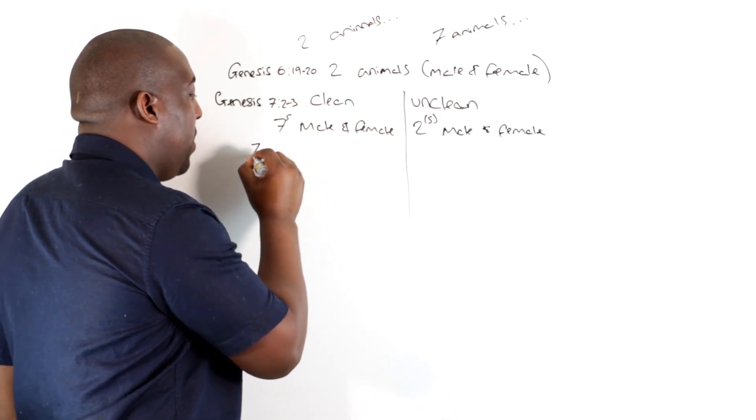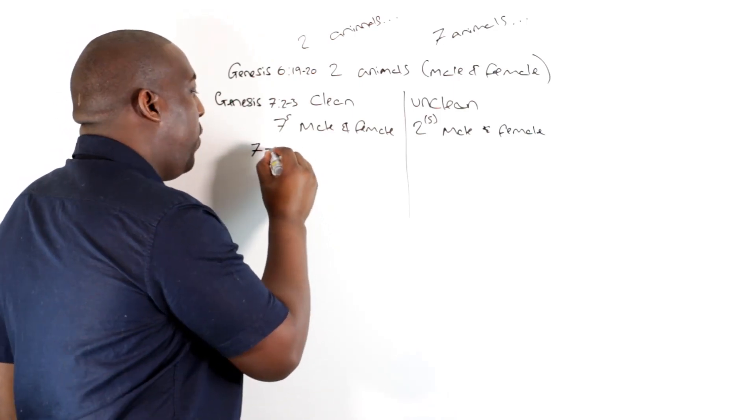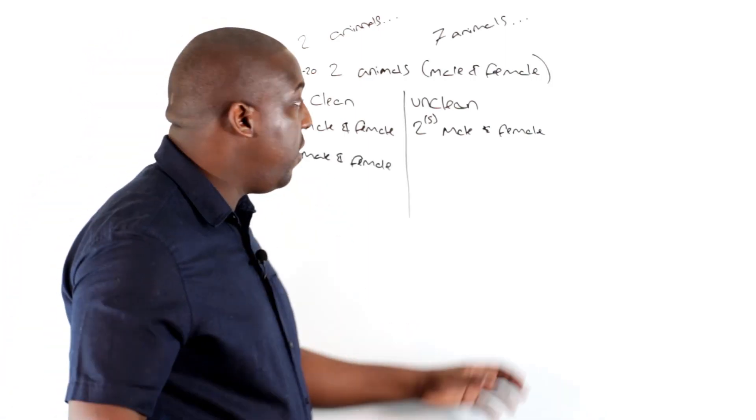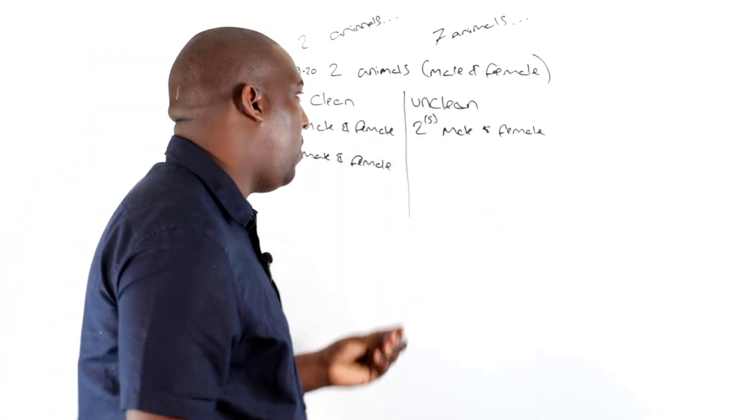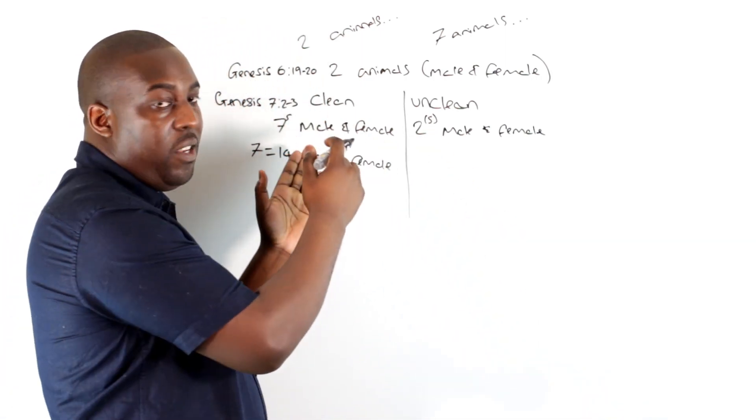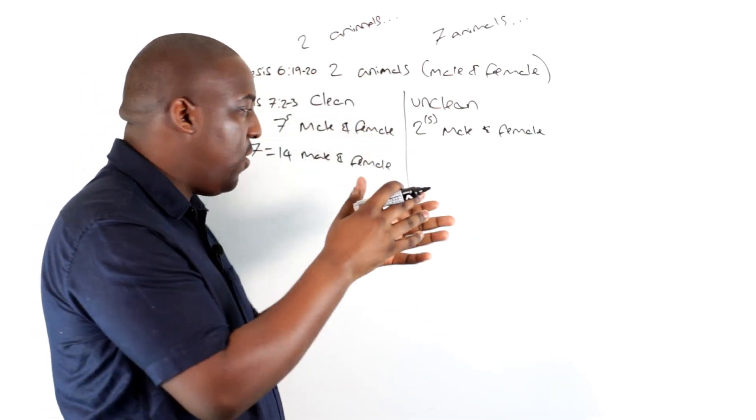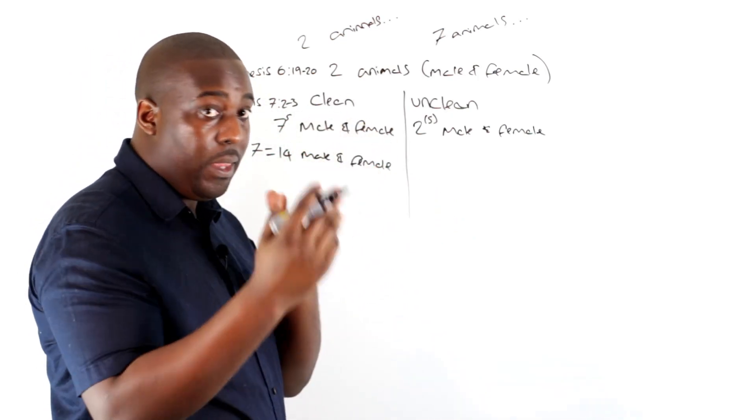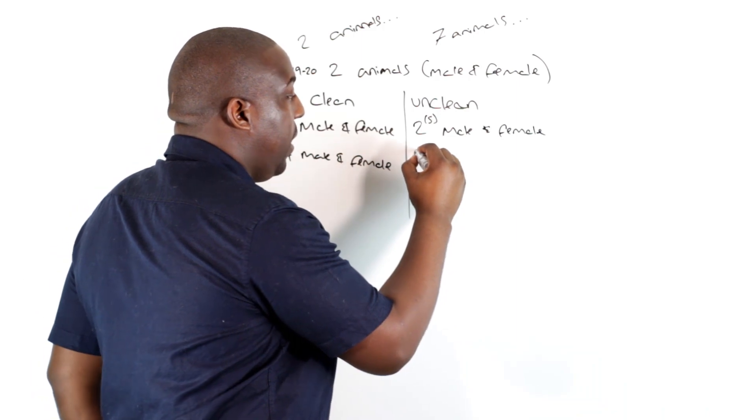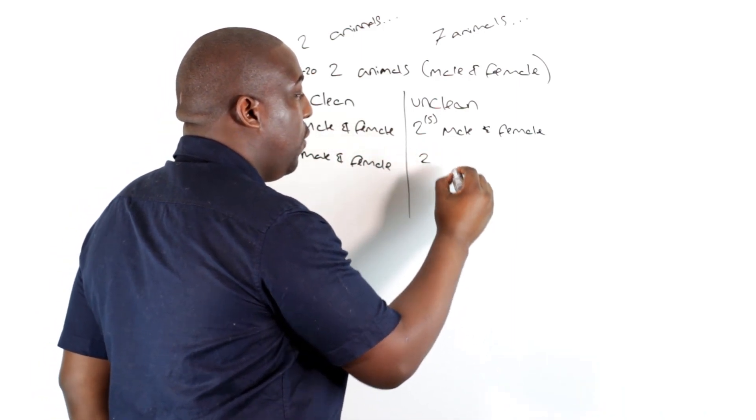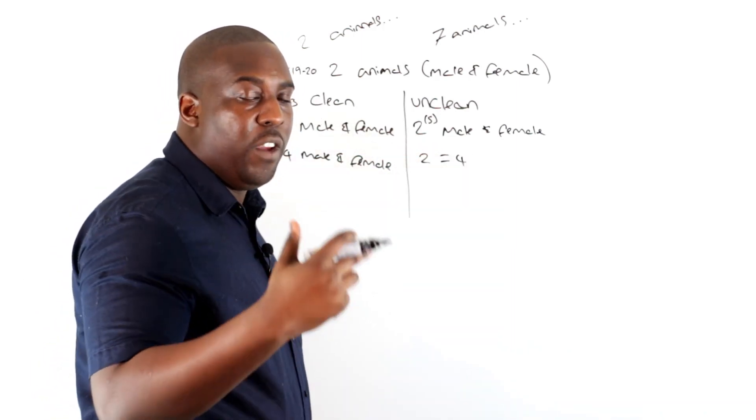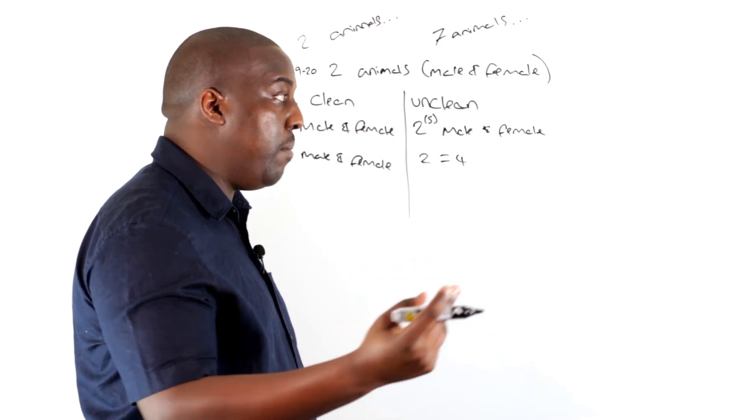The reason I put the little S up here in brackets is because in this piece of text here, the specific context God is actually talking about is pairs. So this could actually be by two, as in two pairs, which would be four of each unclean animal, male and female.